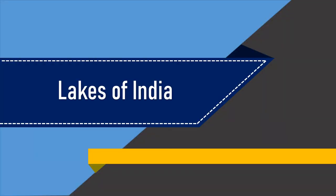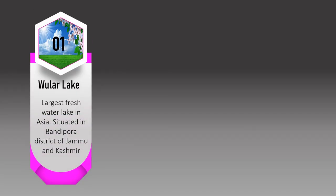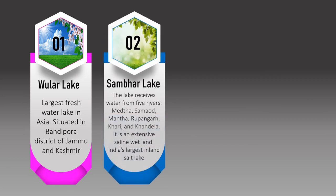Now we cover the lakes of India. We have already covered Himalayan and Peninsular rivers; now it's time to talk about Indian lakes. The Wular Lake is very important — it is the largest freshwater lake in Asia, situated in Bandipora district of Jammu and Kashmir.